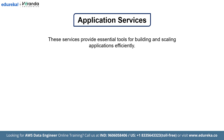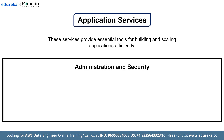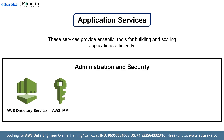Now let's dive into administration and security services that ensure our AWS environment remains secure and well managed. First on the list we have AWS Directory Service. AWS Directory Service provides multiple ways to use Microsoft Active Directory (AD) with other AWS services. It enables your directory-aware workloads and AWS resources to use managed Active Directory in the AWS cloud. Next is AWS IAM, which stands for Identity and Access Management. AWS IAM enables you to manage access to AWS services and resources securely. Using IAM, you can create and manage AWS users and groups and use permissions to allow and deny their access to AWS resources.